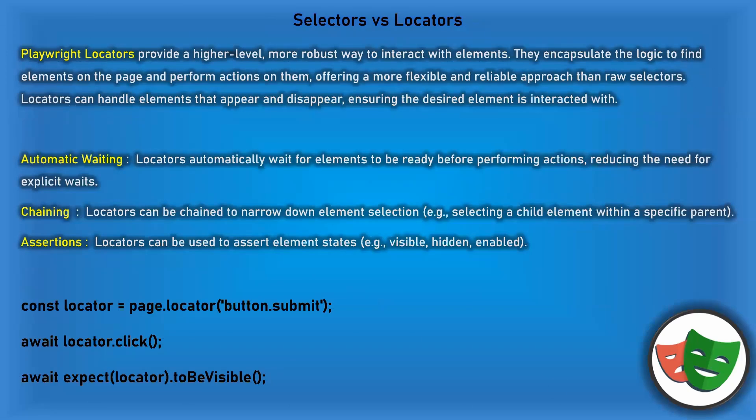Locators are a higher-level API inside Playwright. This is where Playwright makes the difference — rather than directly giving the selector string to a method, you create a locator object. Why do we need locators? Because when you use selectors, there is no automatic waiting. If the element is not found, you need to manually wait for it to appear. Whereas with locators, Playwright takes care of automatic waiting. Locators can also be chained and assertions like visible, hidden, enabled are easily available.